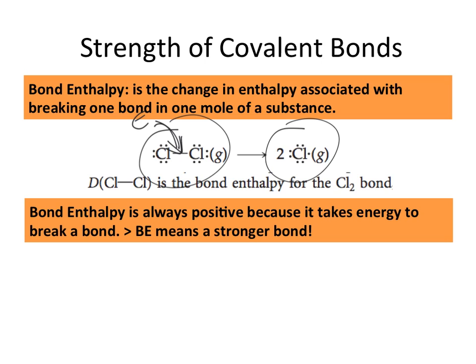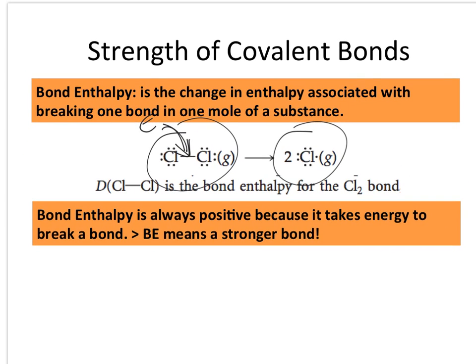The higher the bond enthalpy, the stronger the bond — the more energy you have to add to break bonds, the better the overlap and the stronger those bonds. Bond enthalpy is represented using notation like Cl-Cl single bond, and the value you get from a chart corresponds to that specific bond type. You can look up the enthalpy value associated with a chlorine-chlorine single bond to find out how much energy must be put in to break it.